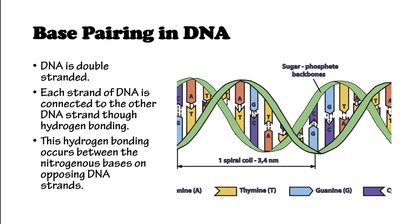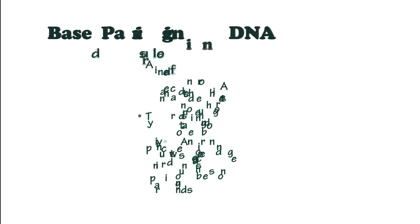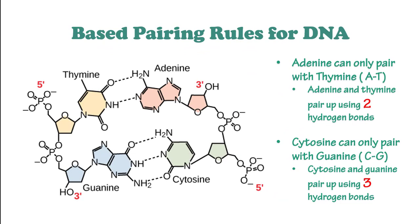Base pairing in DNA: DNA is double-stranded. Each strand of DNA is connected to the other DNA strand through hydrogen bonding as shown. This hydrogen bond occurs between the nitrogenous bases on opposing DNA strands. Adenine can only pair with thymine, and when it pairs, it creates two hydrogen bonds. Cytosine can only pair with guanine, and when it pairs, it creates three hydrogen bonds.